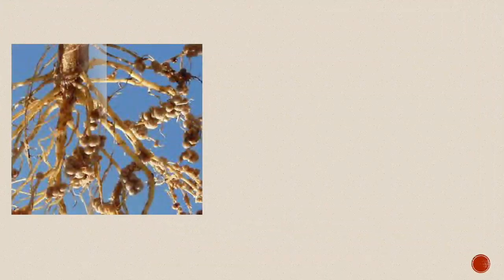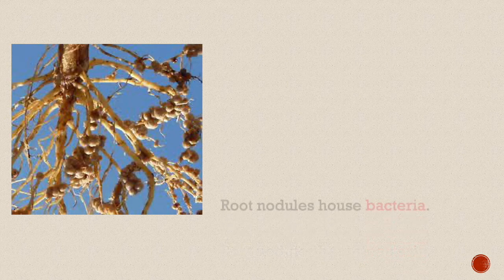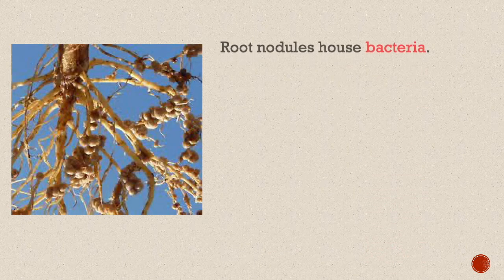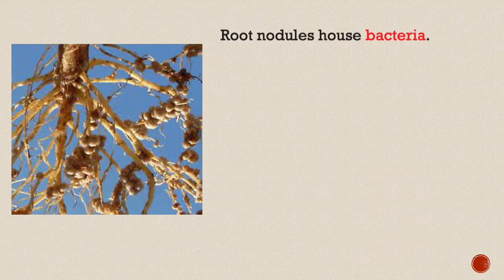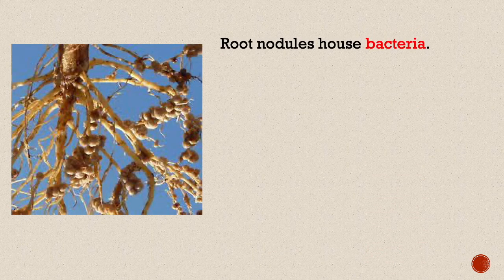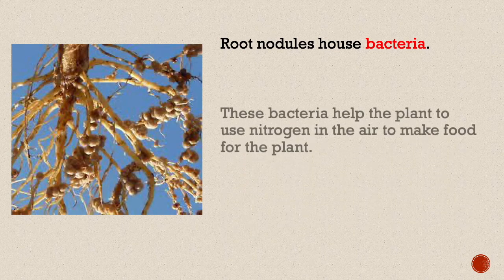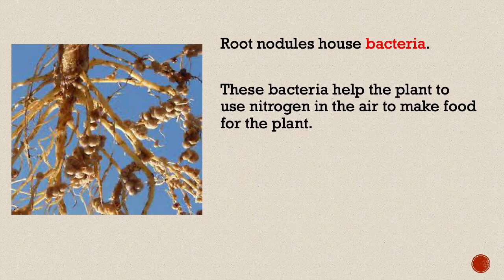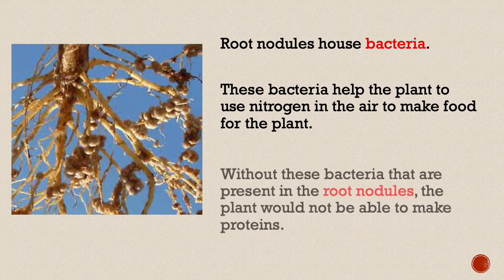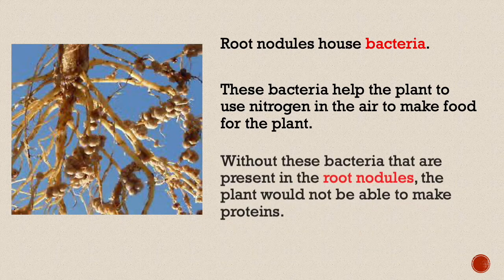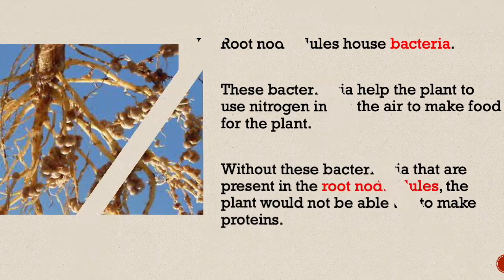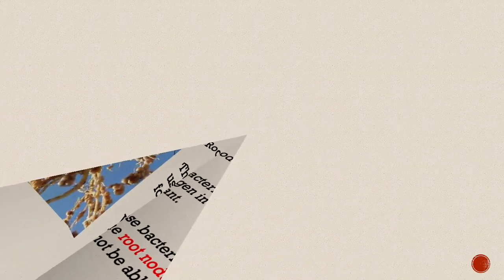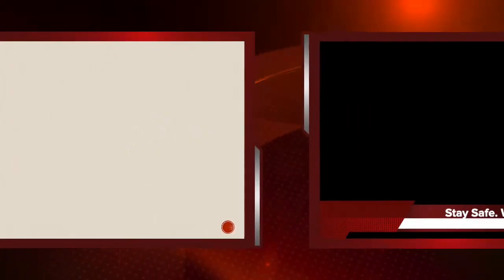Root nodules house bacteria. These bacteria help the plant to use nitrogen in the air to make food for the plant. Without these bacteria that are present in the root nodules, the plant would not be able to make proteins.